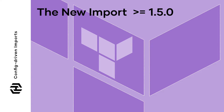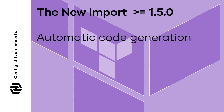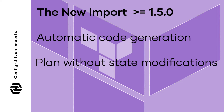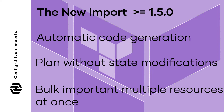Now, with Terraform 1.5 and the config-driven import feature, we get a lot of benefits that help solve those issues. We have this new import block where we define the Terraform code for each resource, and it will actually generate all the code so we don't have to go back and write it manually. We don't have to modify the state when we run the import command. It'll run a plan from the generated code so we can see if it'll work. Then all we have to do is run a Terraform apply and the resource is imported. Instead of importing resources one by one, we can do a bulk import by defining all of them in import blocks at once, all in one command.